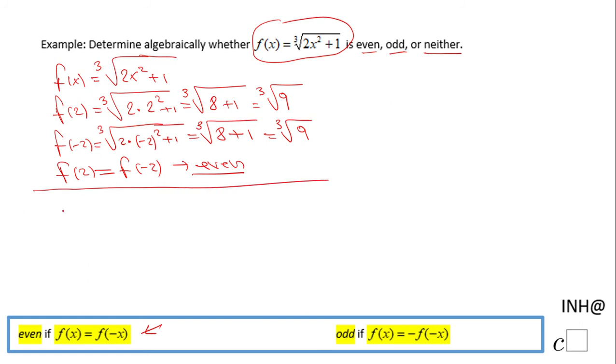That will be cubic root of 2 times the quantity (-x)² plus 1. Then we can simplify the quantity under the cubic root. What I mean by (-x)² is negative x times negative x, that will be x² plus 1.